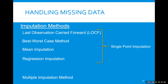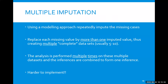A better approach is something called multiple imputation, which is really considered the gold standard for imputing data. What we do is use a modeling approach to repeatedly impute the missing cases and replace each missing value with more than one imputed value. In essence, we're creating multiple complete data sets — usually at least five, but it can be more — and the analysis is then performed multiple times on these data sets, so the inference needs to be combined. It's a bit harder to implement, which is why people often default to simpler methods, but it is a much better method.